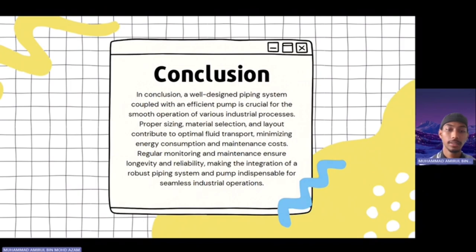For the conclusion: in conclusion, a well-designed piping system coupled with an efficient pump is crucial for the smooth operation of various industrial processes. Proper sizing, material selection, and layout contribute to optimal fluid transport, minimizing energy consumption and maintenance costs. Regular monitoring and maintenance ensure longevity and reliability, making the integration of a robust piping system and pump indispensable for seamless industrial operations. That's all from me, thank you.